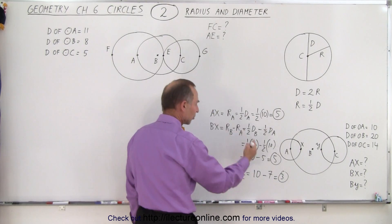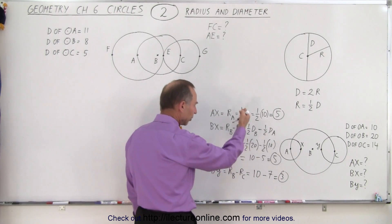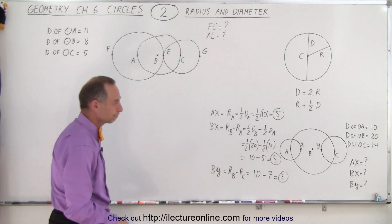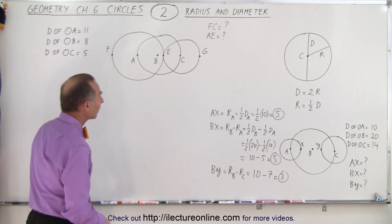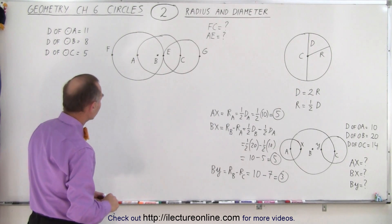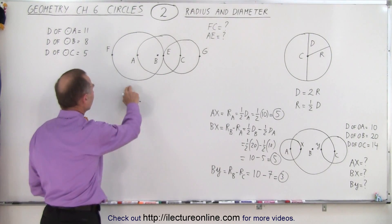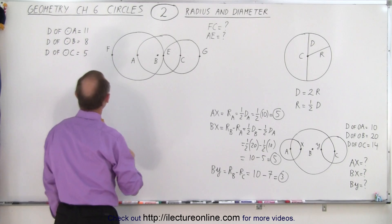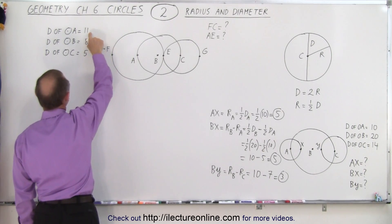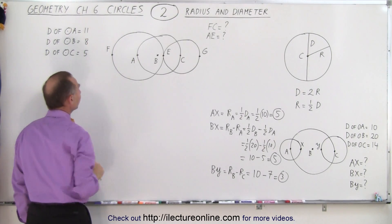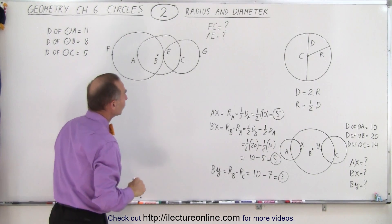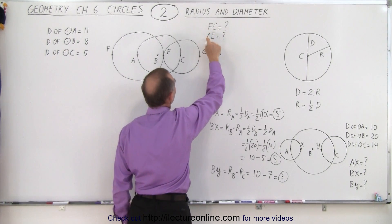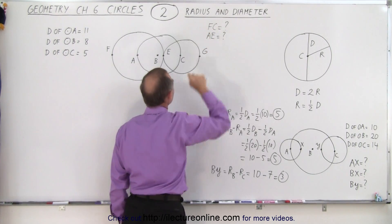Notice that as you get used to it, you can probably make this a little bit faster and shorter. Now we have another set of circles — three circles: a big one, a medium-sized one, and a smaller one. They give us the diameters: 11, 8, and 5. They want us to find the distance from F to C and the distance from A to E.